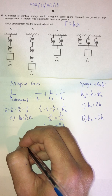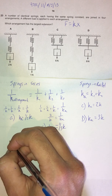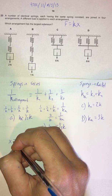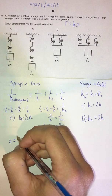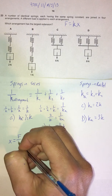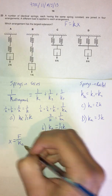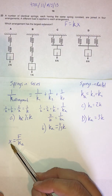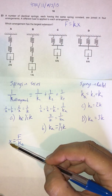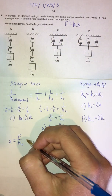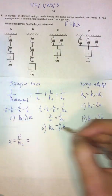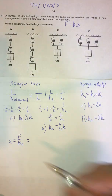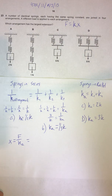Using Hooke's law rearranged to make extension the subject: x = F / k_arrangement. We can substitute in the force and arrangement spring constant for each choice A, B, C, and D to find which gives the largest extension.